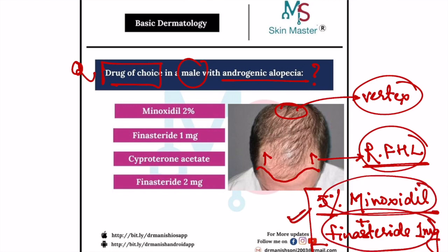But if you look at the options, the minoxidil mentioned here is 2%. Remember, 2% minoxidil is generally preferred for females, not males. So here the answer becomes finasteride 1 mg.